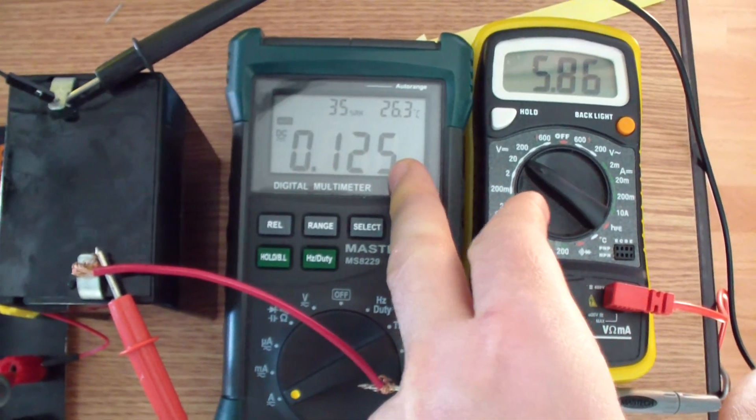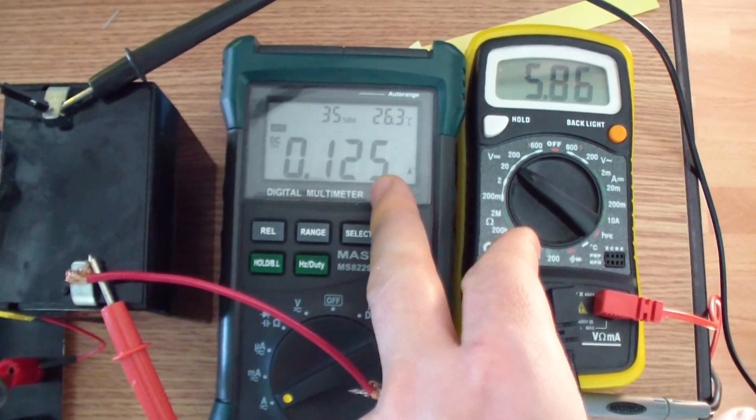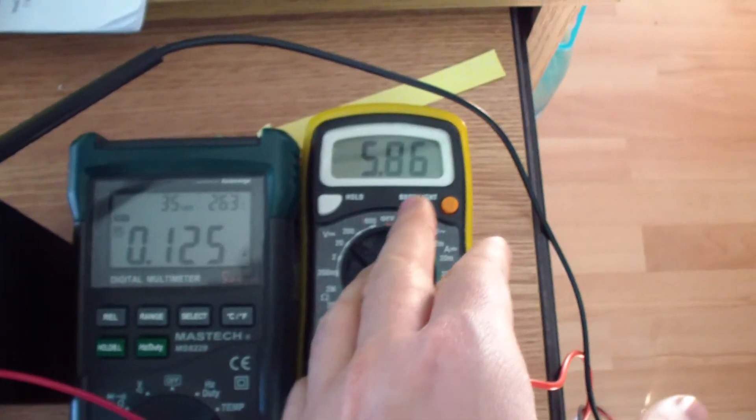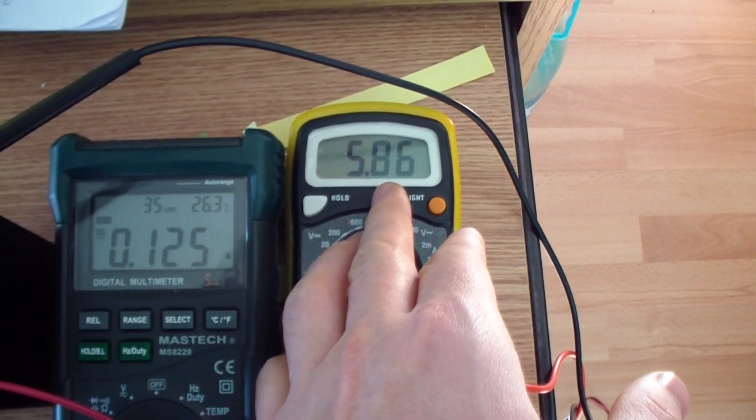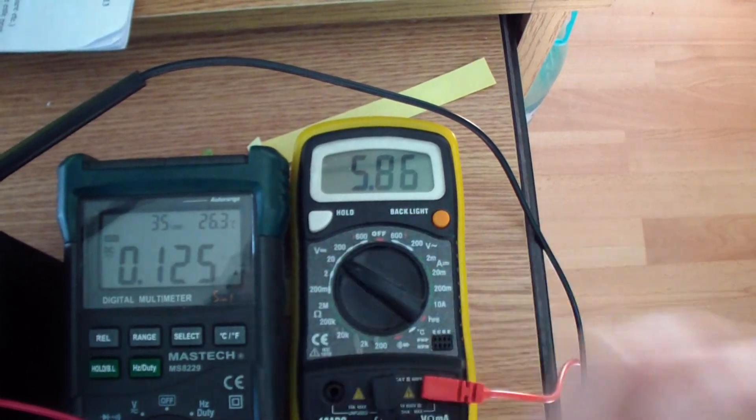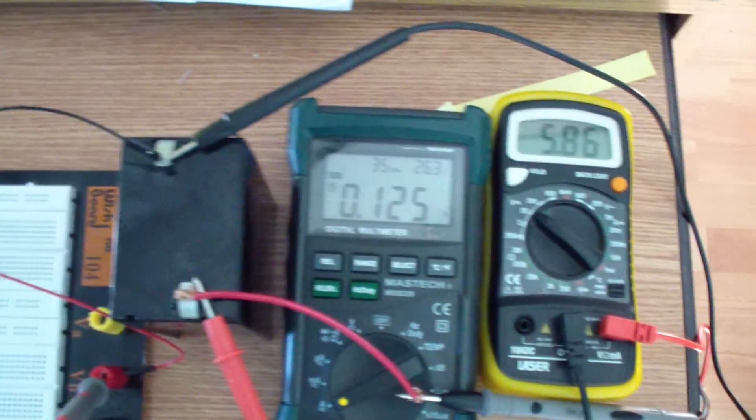0.14 amps almost, and here is the battery voltage at this moment, 5.86 volts are applied to the battery.